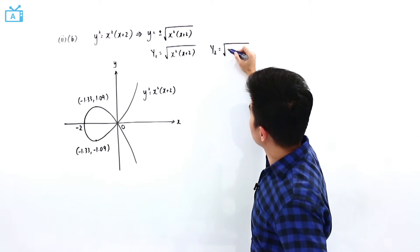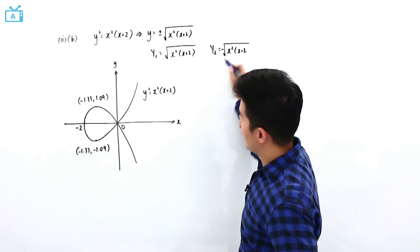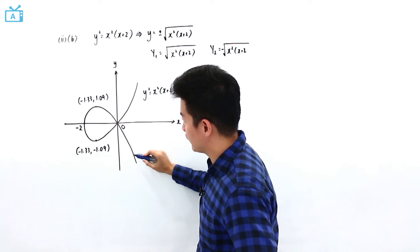on my graphing calculator, I let it be also this, but with the negative. And that will provide me this portion of the graph.